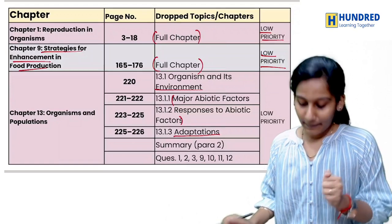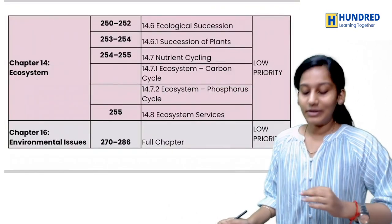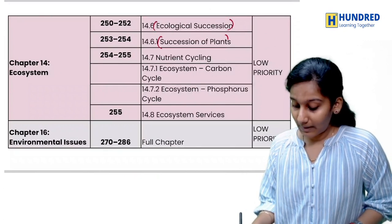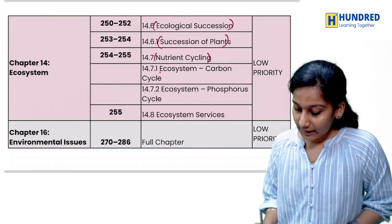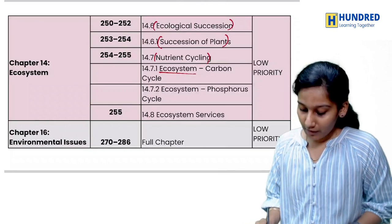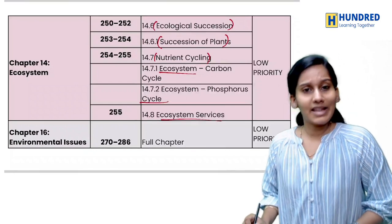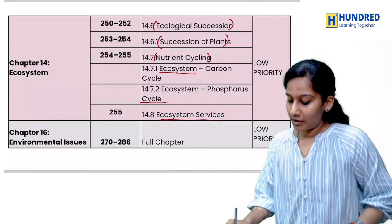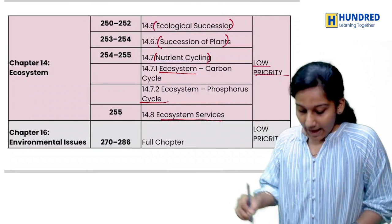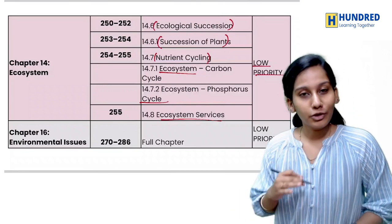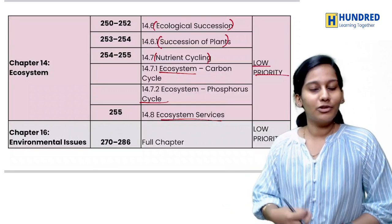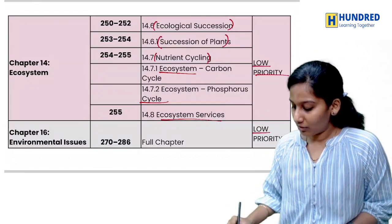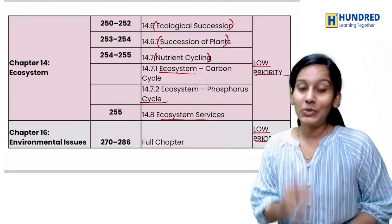Next comes Organism and Population — the population part is very important for NEET. The topics on organism and environment, biotic and abiotic factors, responses, and adaptation are okay to read. These are all low priority. Then Ecosystem — ecological succession, succession of plants, nutrient cycling, carbon cycle, phosphorus cycle, and ecosystem services can be removed as they are low priority. Environmental Issues, which covers pollution topics, is also low priority.